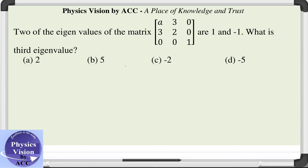Welcome back dear students to the Physics Vision classes. The given question is: two of the eigenvalues of a matrix are given as 1 and minus 1. We need to calculate what is the third eigenvalue.